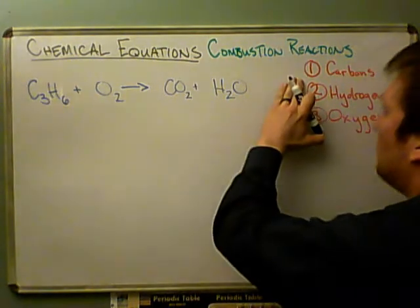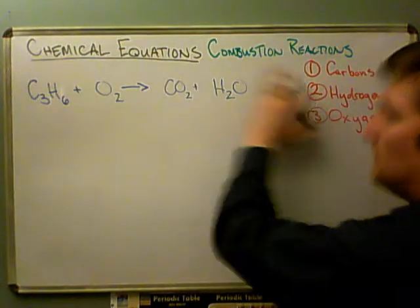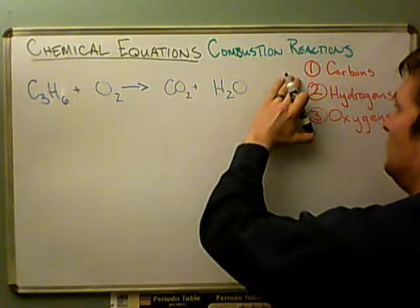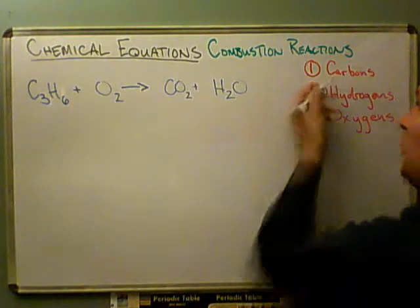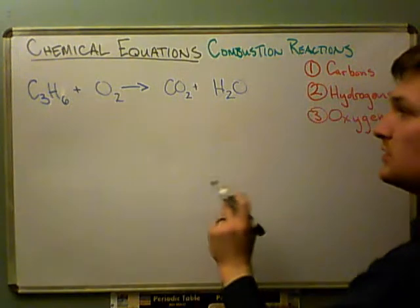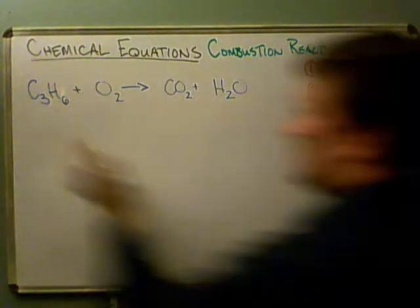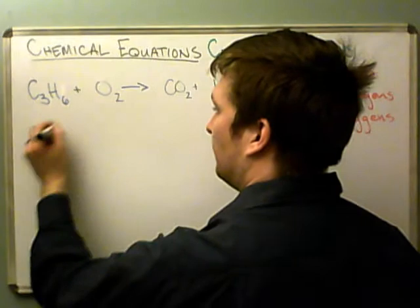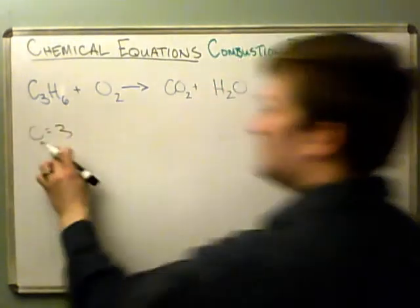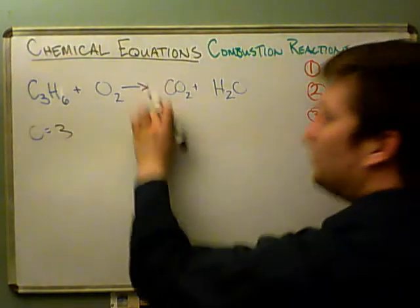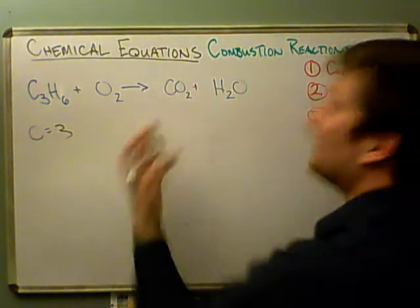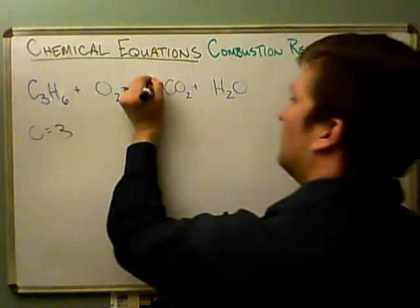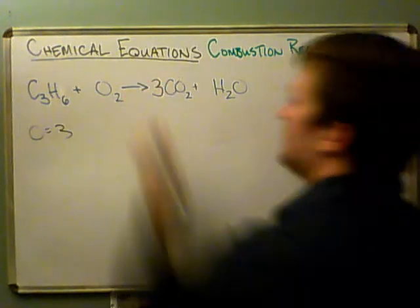Since it's a hydrocarbon combustion, we start with carbons first. I have a total of three carbons on the reactant side, so I need to put a coefficient of three in front of CO₂ to give me three carbons.